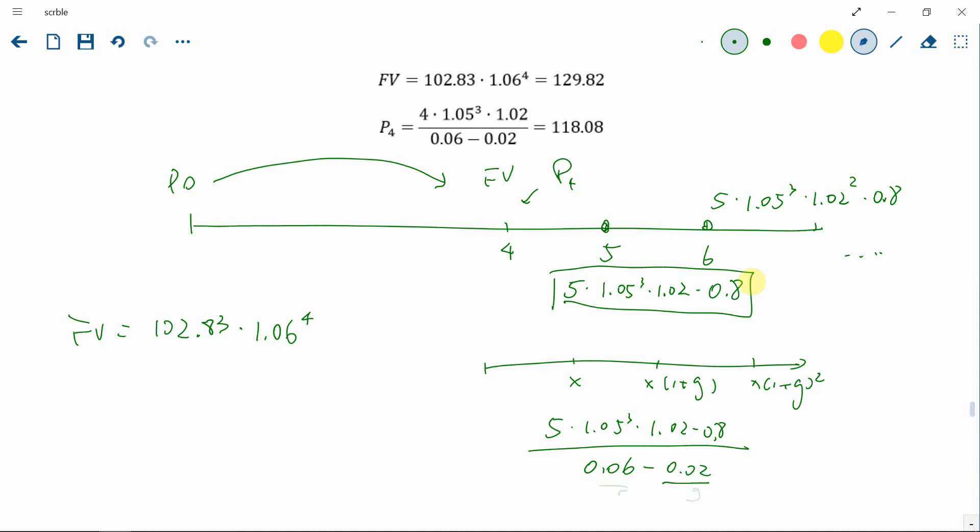Let's erase it so it's not confusing. So this number, whatever this number is, 118.08 is our P4.